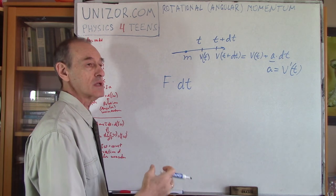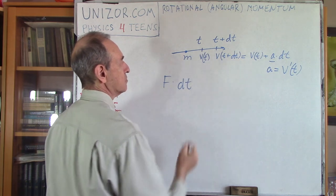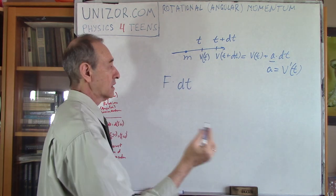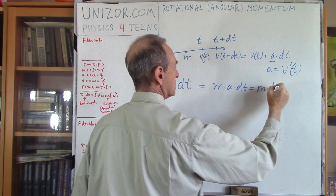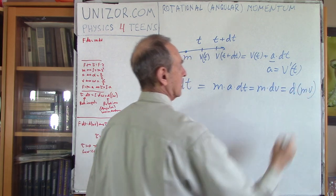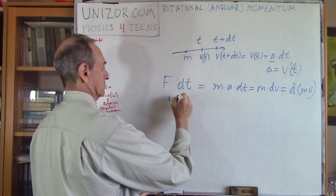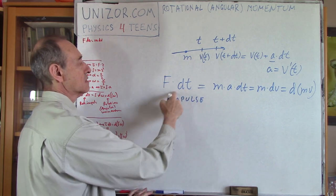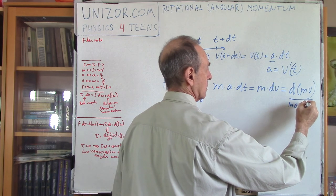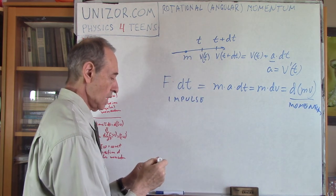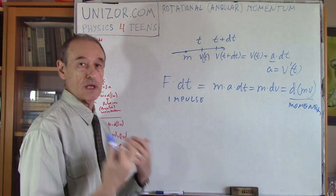What happens with the momentum? It changes from M times V of T to M times V of T plus DT. So the momentum will increase by M times A times DT, which equals M times DV, which equals d of MV, since M is constant. This is the impulse of force F during the infinitesimal time increment DT, and this is the increment in momentum. So impulse during infinitesimal time DT causes an infinitesimal increment of the momentum.